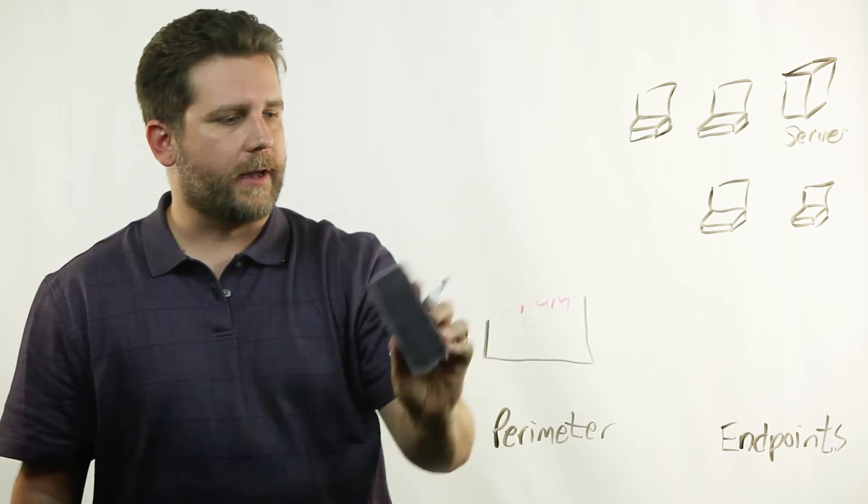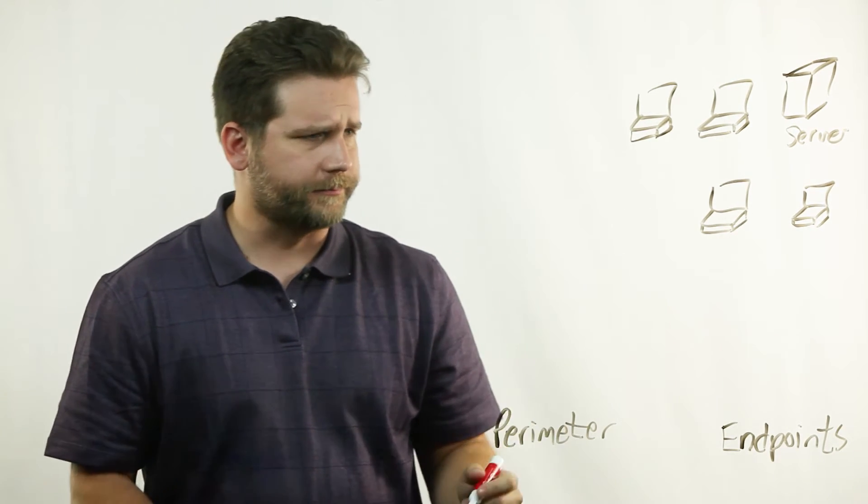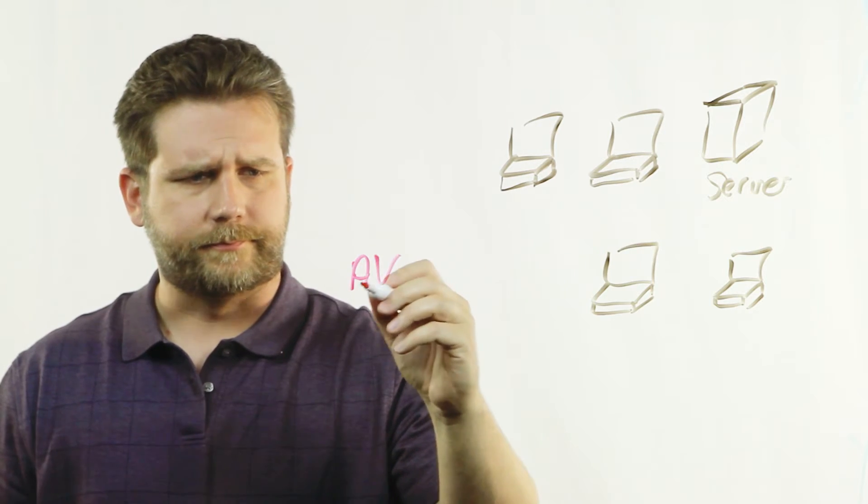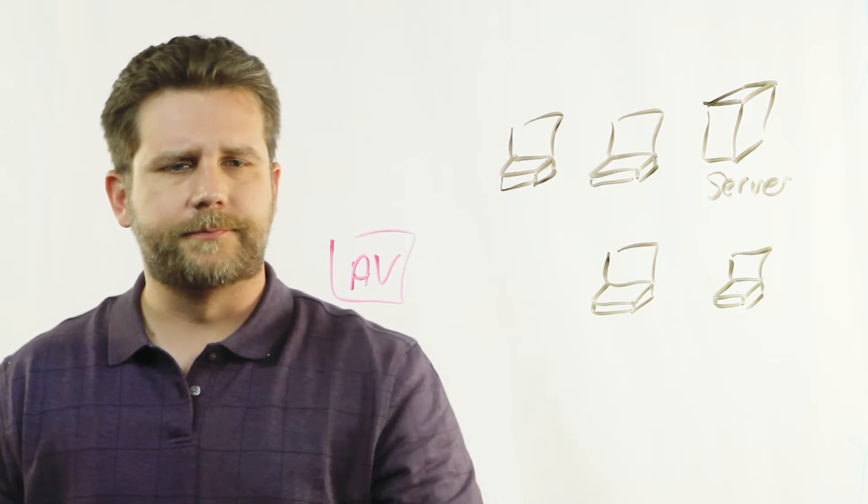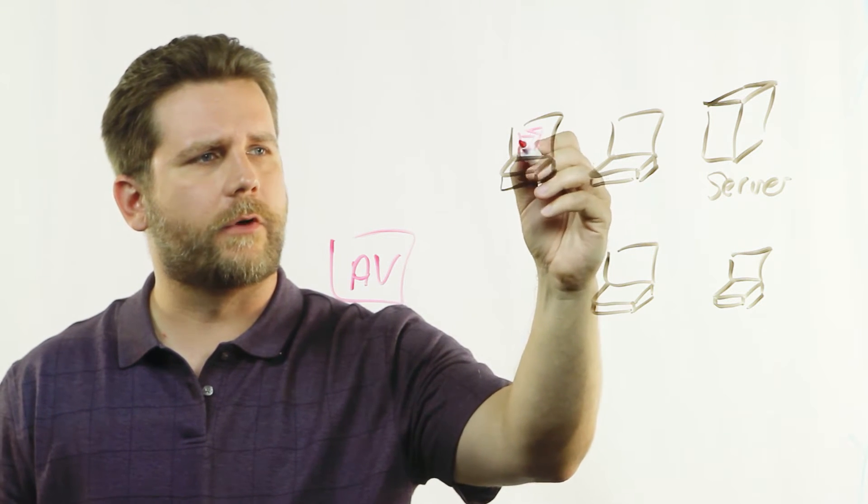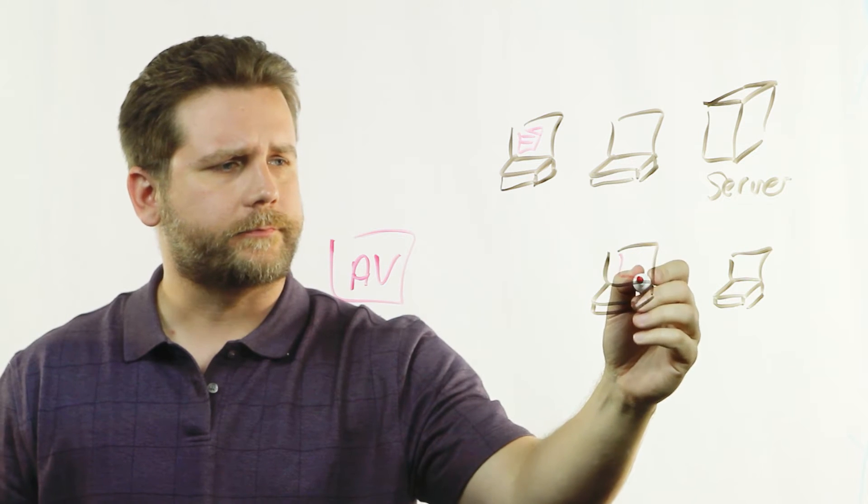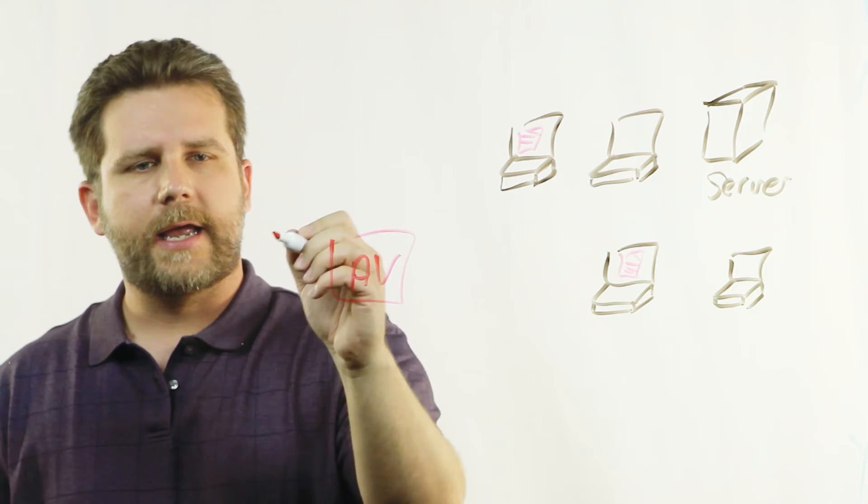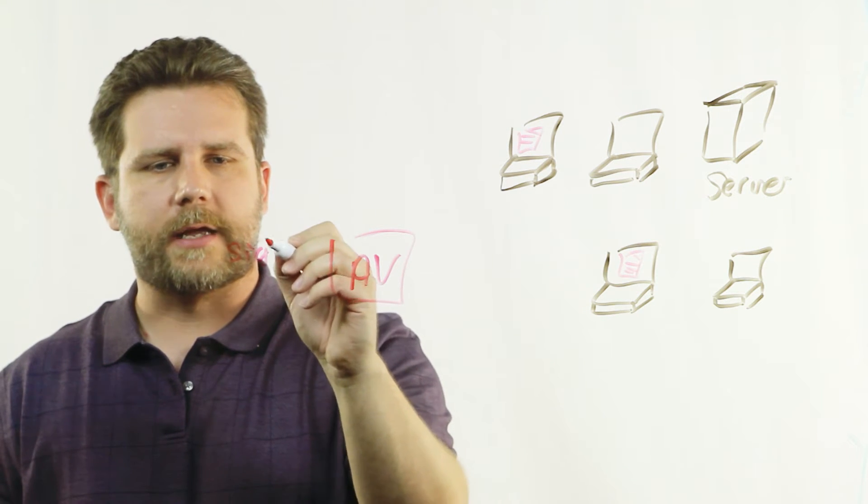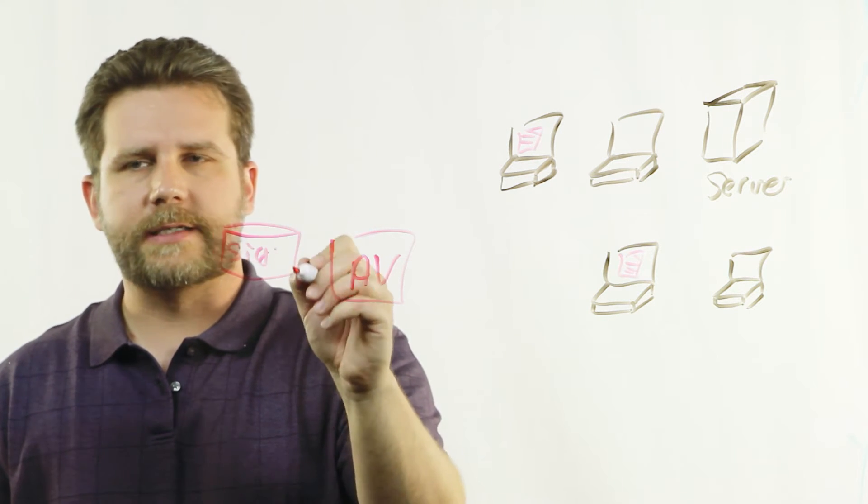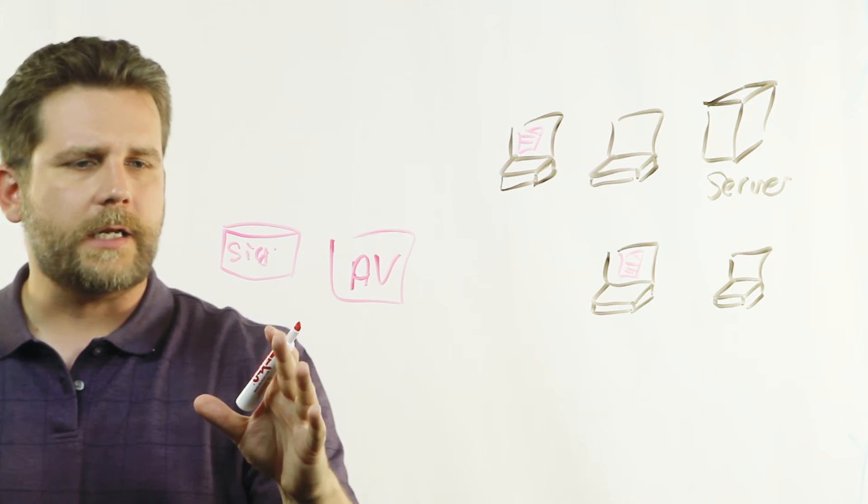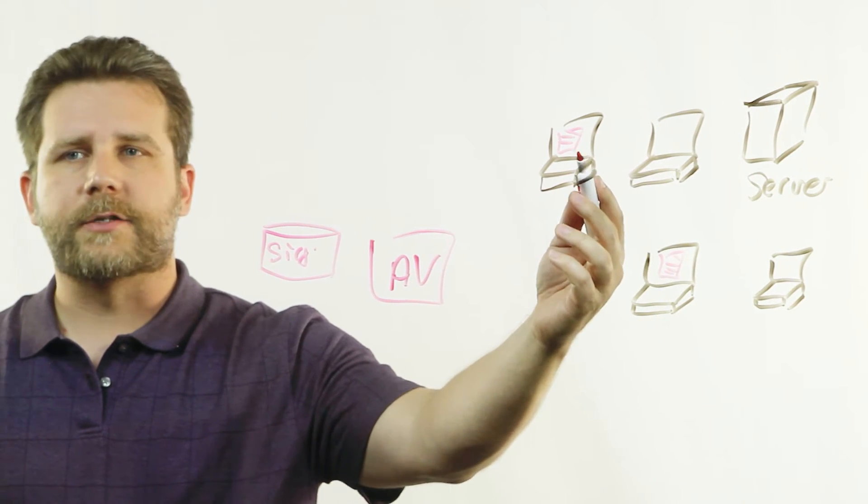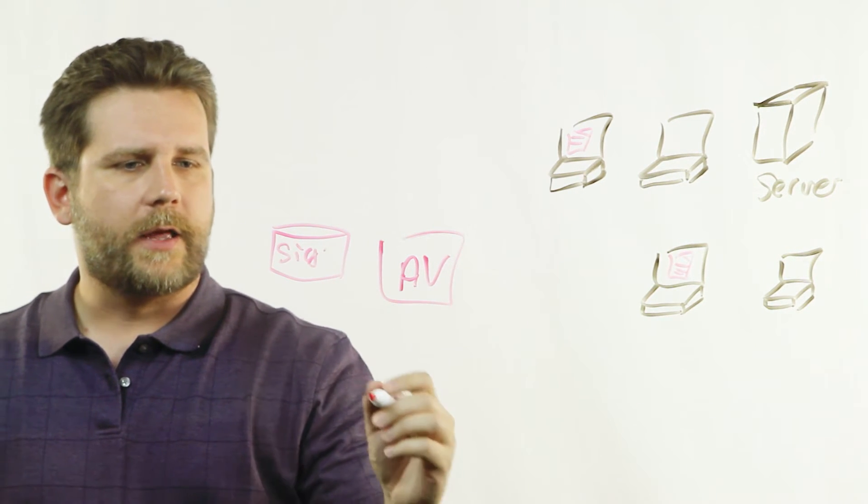So let's talk about protecting the endpoints here. The first obvious product category that we've all heard of over the years is antivirus. Antivirus is really looking for malicious files, malware that's sitting on our endpoints. And in the old days, they used to use signatures. They would have these big databases of known past malware. And hopefully based on what the bad guys have done in the past, they would be able to detect whether files were good or bad on the endpoints.